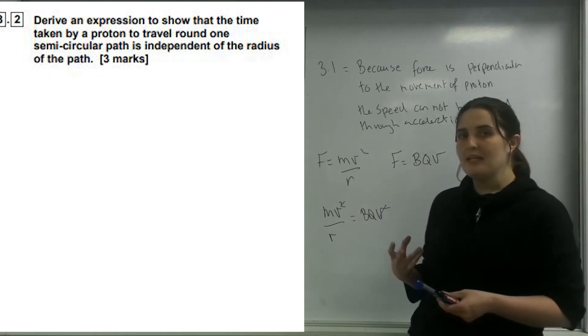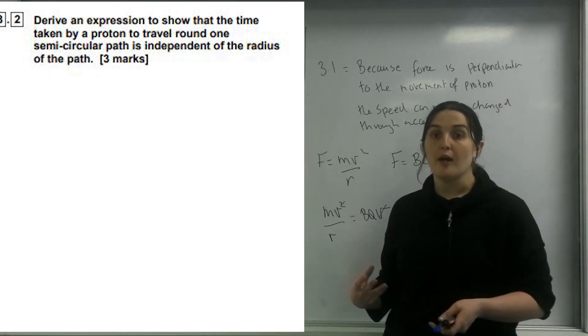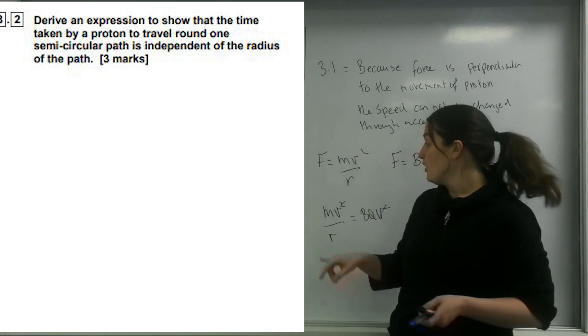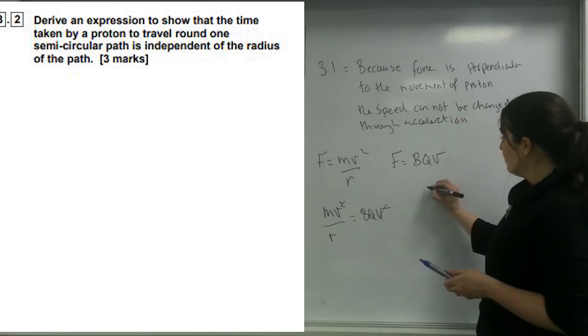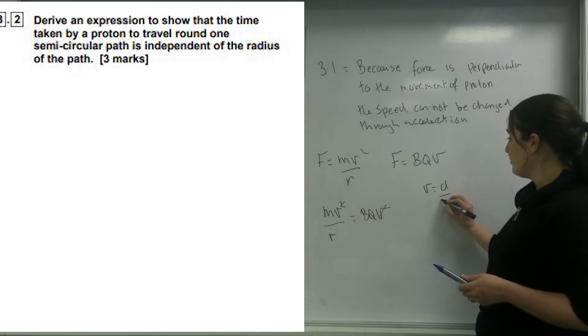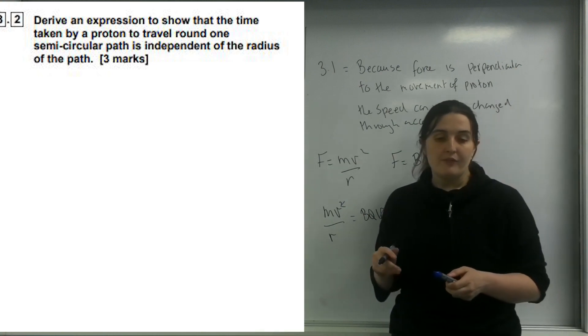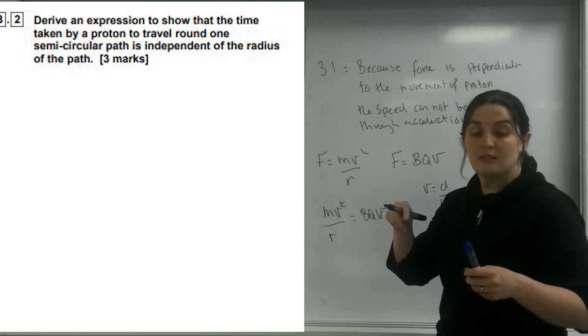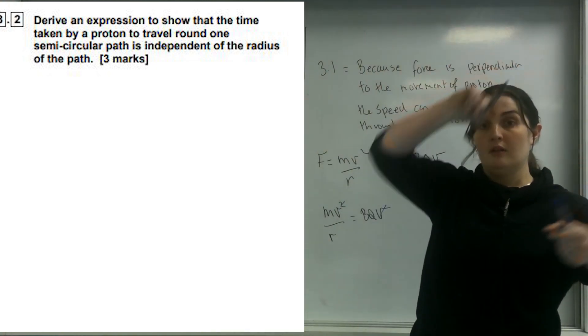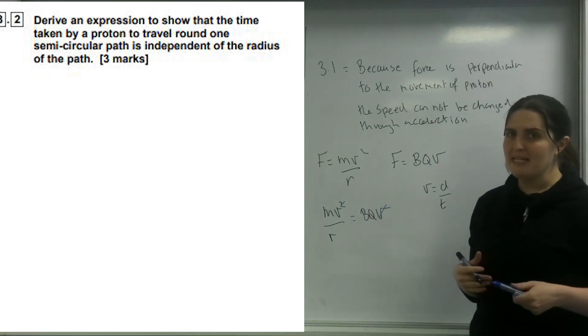The problem is here is that I have not got something to do with time. The only thing that has anything to do with time is this velocity. So velocity is the distance travelled over the time. Now this is a semicircle, so the distance I would travel is 2πr.